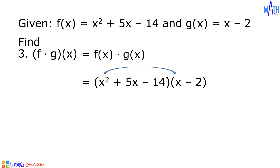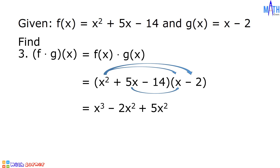x squared times x is equal to x cubed. x squared times negative 2 is equal to negative 2x squared. 5x times x is equal to positive 5x squared. 5x times negative 2 is equal to negative 10x.